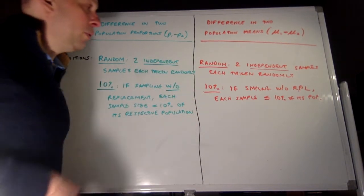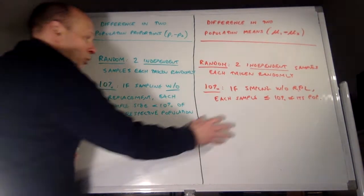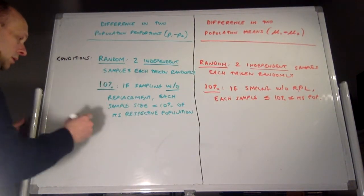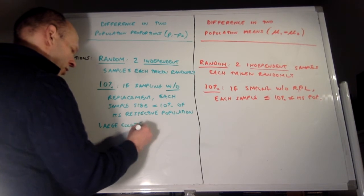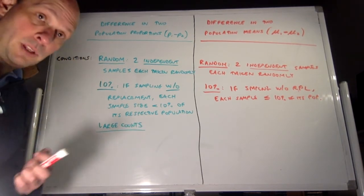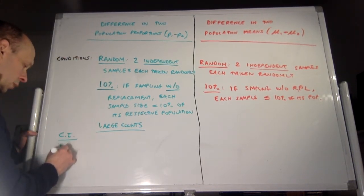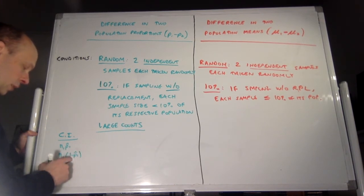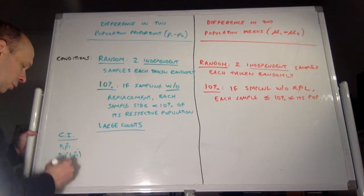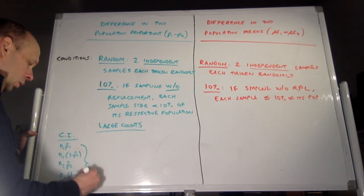The next condition is needed to ensure our sampling distribution is approximately normal. For proportions, it's the large counts condition — but there's an added wrinkle: this condition is different for the confidence interval versus the significance test. For the confidence interval, you check: n1 times p-hat 1, n1 times (1 minus p-hat 1), n2 times p-hat 2, and n2 times (1 minus p-hat 2) — giving you number of successes and failures in each group. All four values must be greater than or equal to 10.